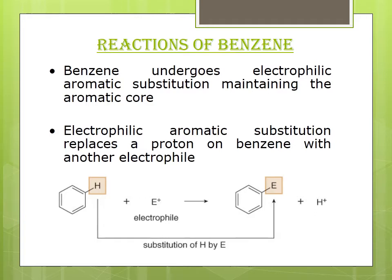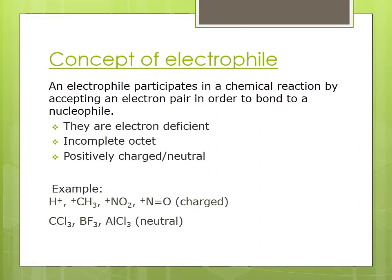Now coming to the concept of electrophile: an electrophile participates in a chemical reaction by accepting an electron pair in order to bond to a nucleophile. The word electrophile can be broken into two words — electro means electron and phile means loving. It is a species which takes away an electron pair because they are electron deficient. Electrophiles should have an incomplete octet, meaning the central atom has an incomplete octet, and hence they are positively charged or can be a neutral species.